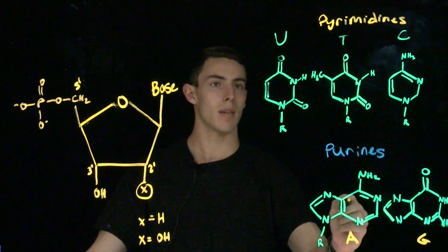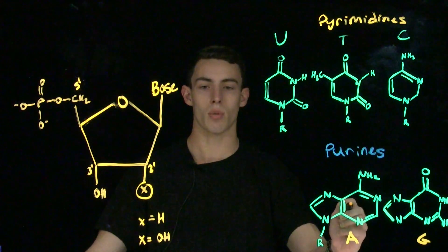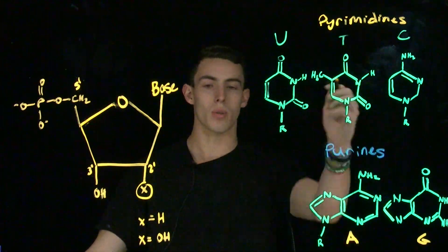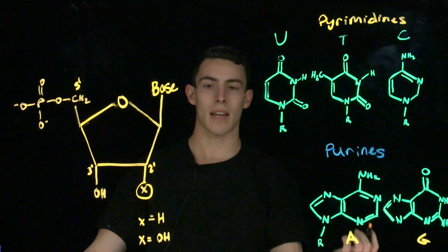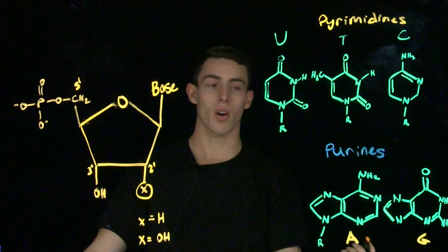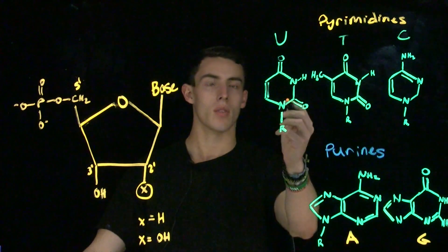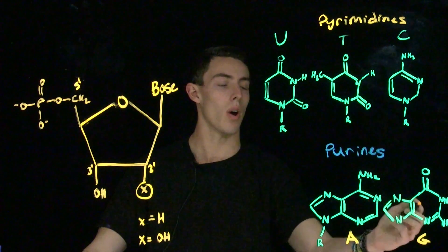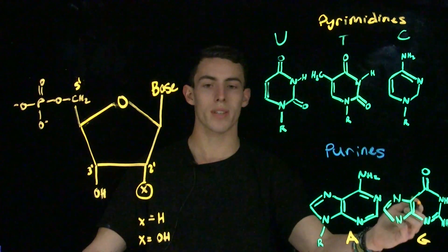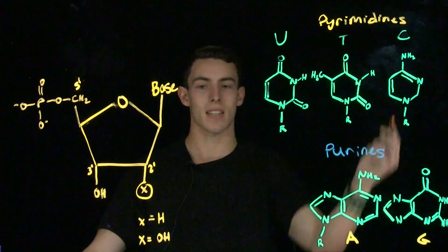Adenine and guanine are the two types of purines. Adenine always base pairs to thymine, or in a double-stranded section of RNA, it will bond to uracil. Guanine will always bind to cytosine.